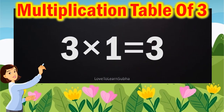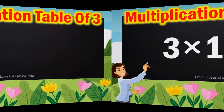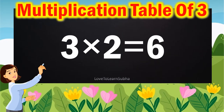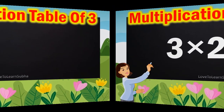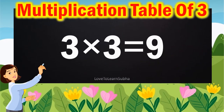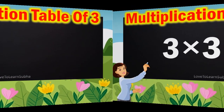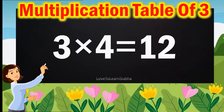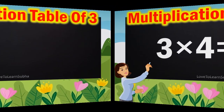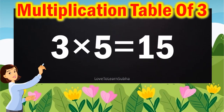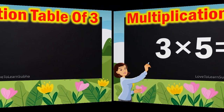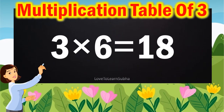3 1s are 3, 3 2s are 6, 3 3s are 9, 3 4s are 12, 3 5s are 15, 3 6s are 18,